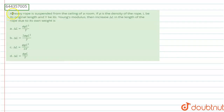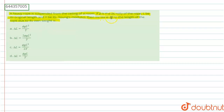The question is: a heavy rope is suspended from the ceiling of a room. If phi is the density of the rope, L is its original length, and Y is its Young's modulus, then find the increase delta-L in the length of the rope due to its own weight. We have to choose the correct option from A, B, C, D.